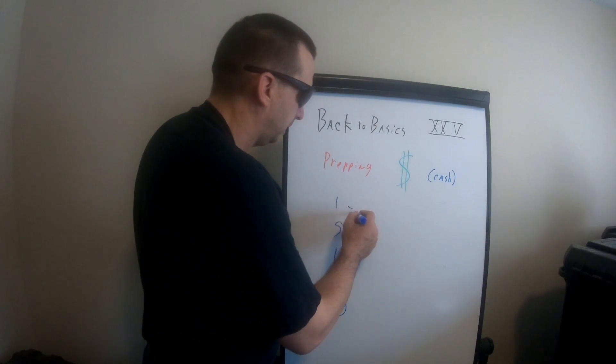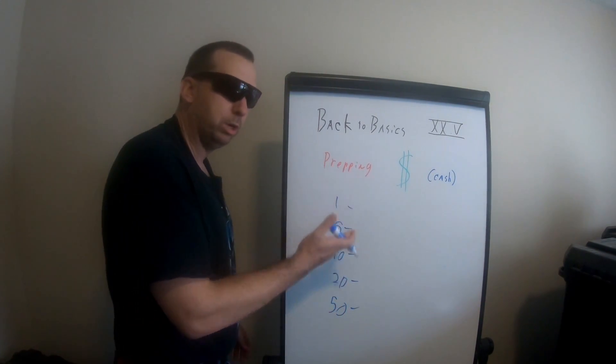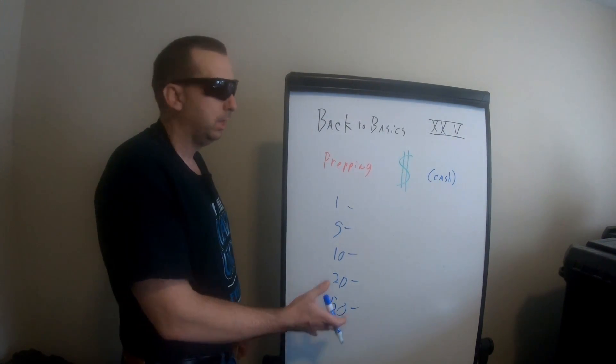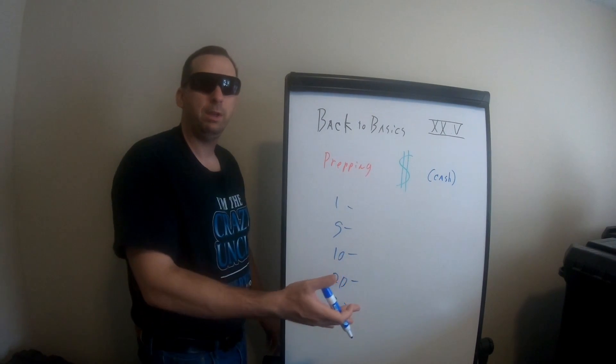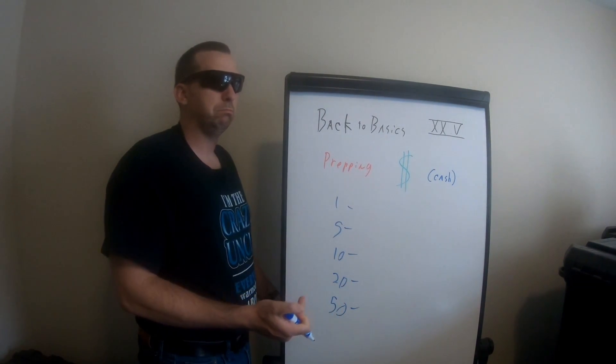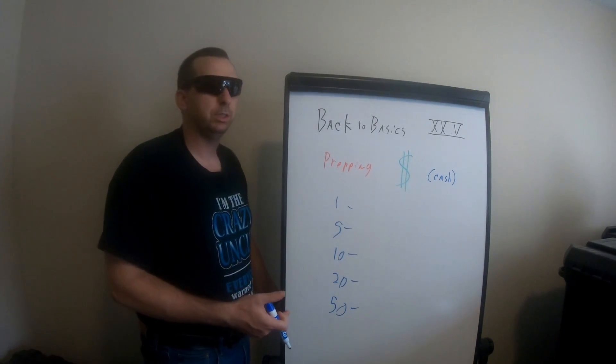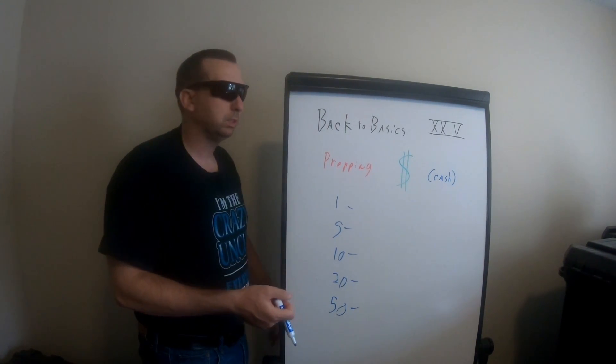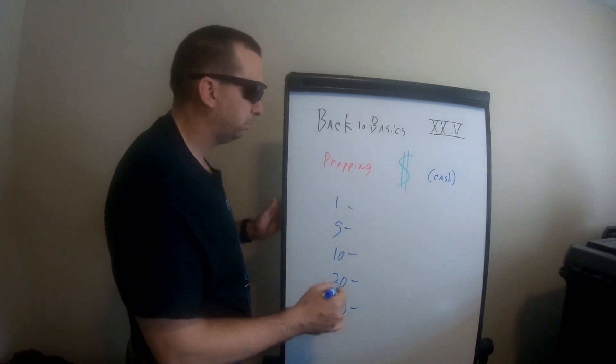Now, I know people can say, well, you got the hundreds too. If you want to go beyond this, that's fine. But there's a reason it's divided up this way. Because if you only have to get $10 of fuel and for some reason the machine's not working, they're not accepting cards, they can't open the till for whatever reason, you don't want to hand them a hundred bucks because then you're out 90. You got to think about this.